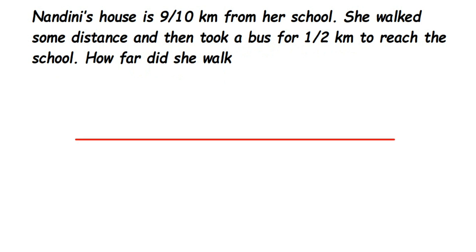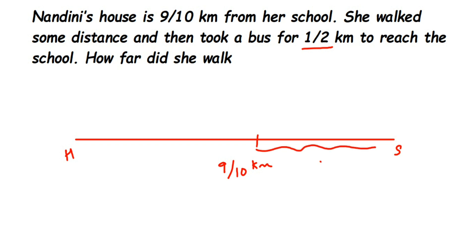Suppose this is a path — I've just taken a straight line. Suppose this is the house and this is the school. The total distance from house to school is 9/10 km. She walked some distance — we don't know how much — and then took a bus for half a kilometer. Suppose from here to here is half a kilometer.